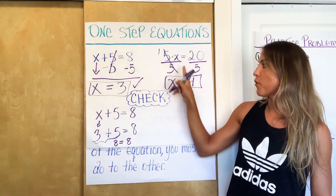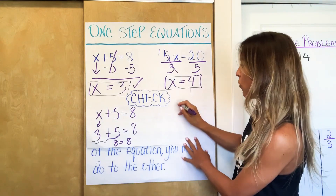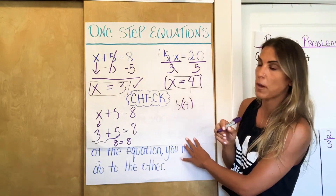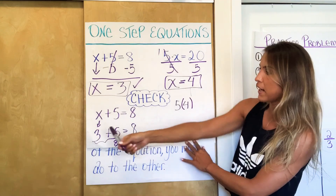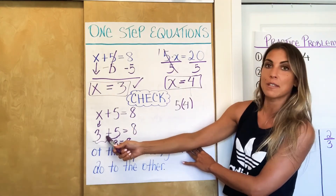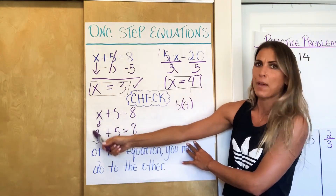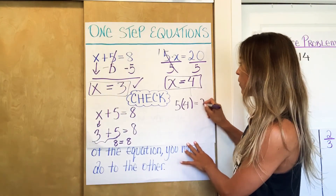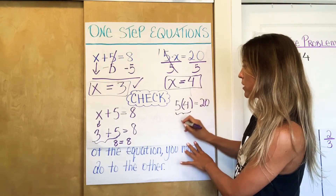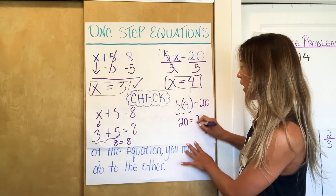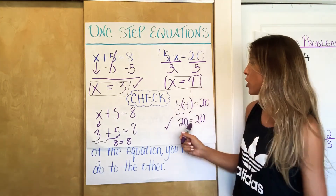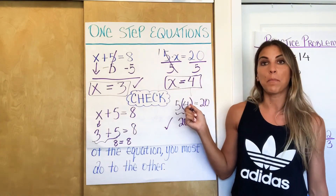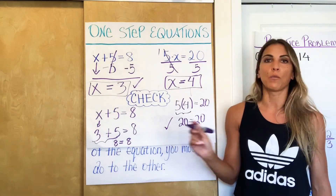The same check applies to 5X equals 20. Replace X with four — use parentheses so you don't write 54. So you have five times four equals 20. Five times four is 20, and we get another true statement — 20 equals 20 — confirming that four is the correct answer. When we substituted four in, we got a statement that was true.